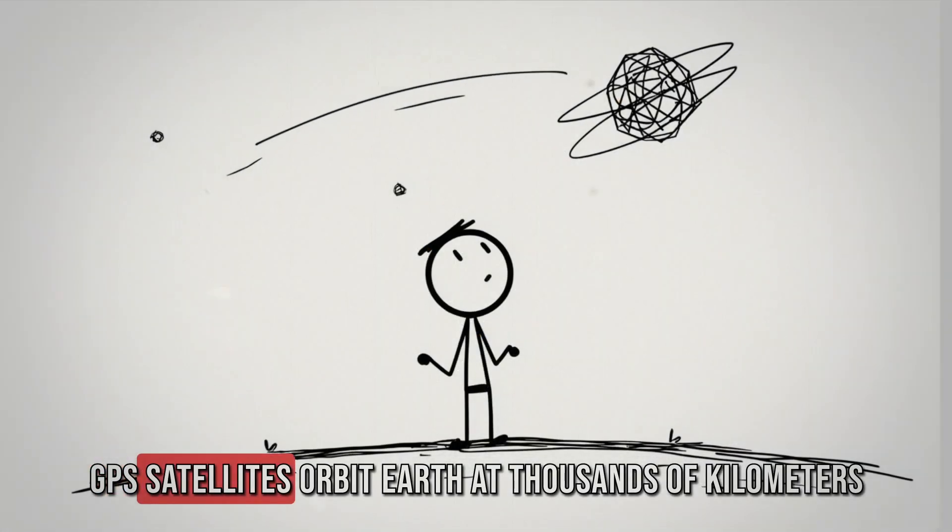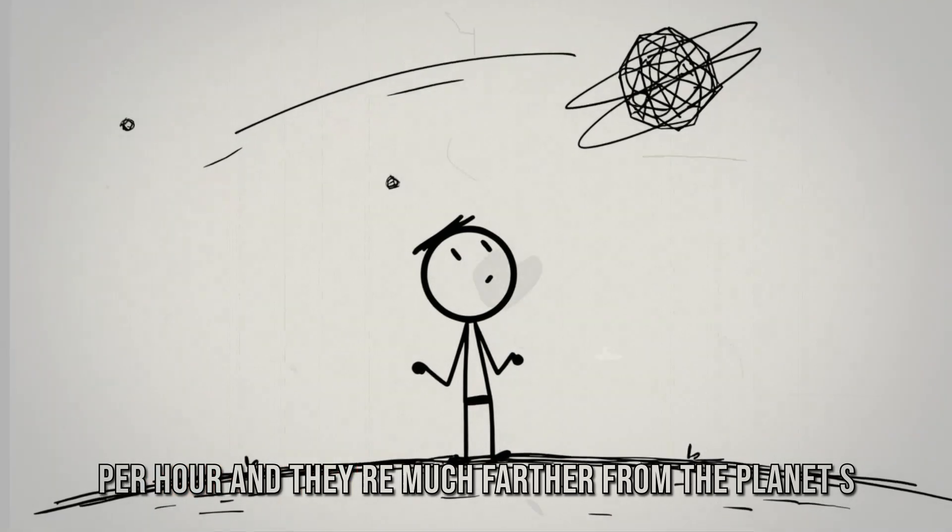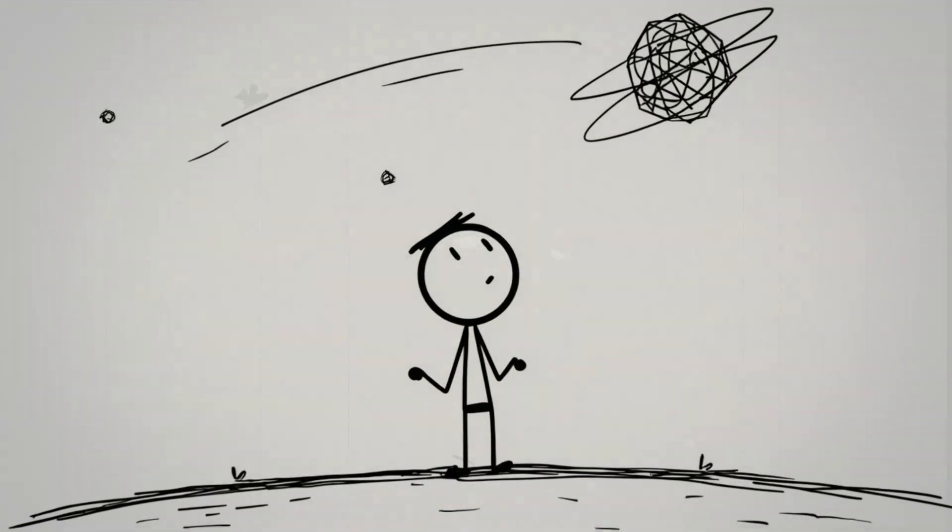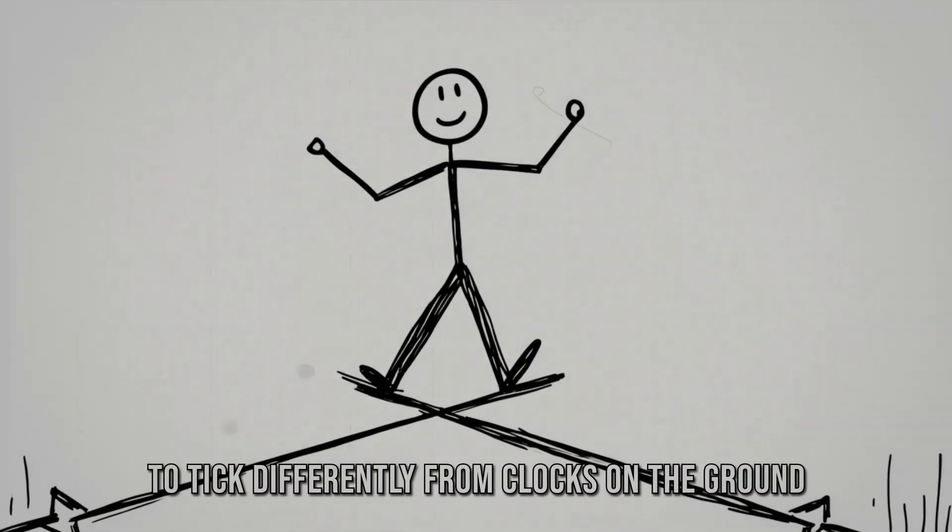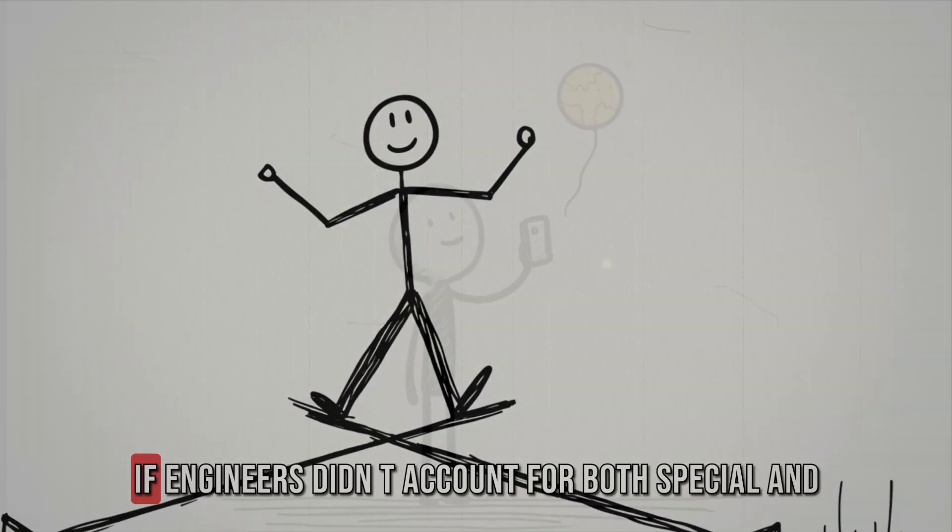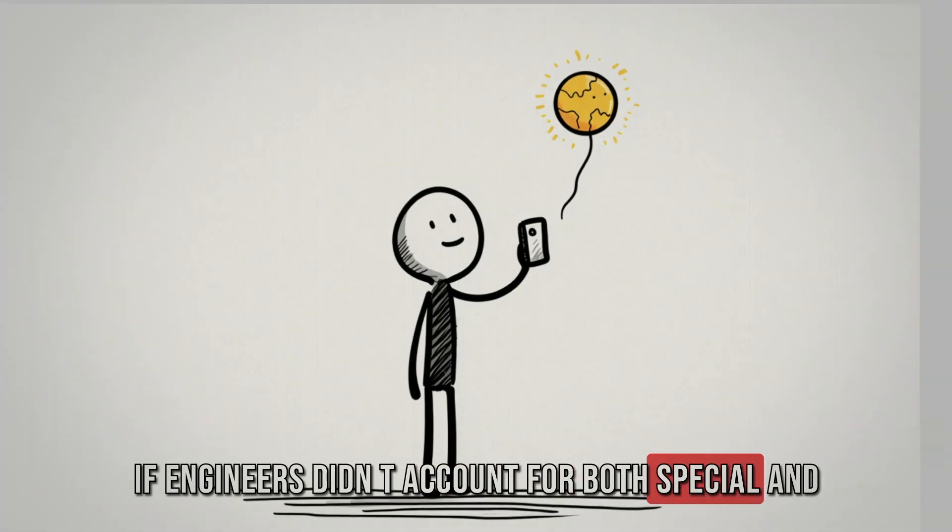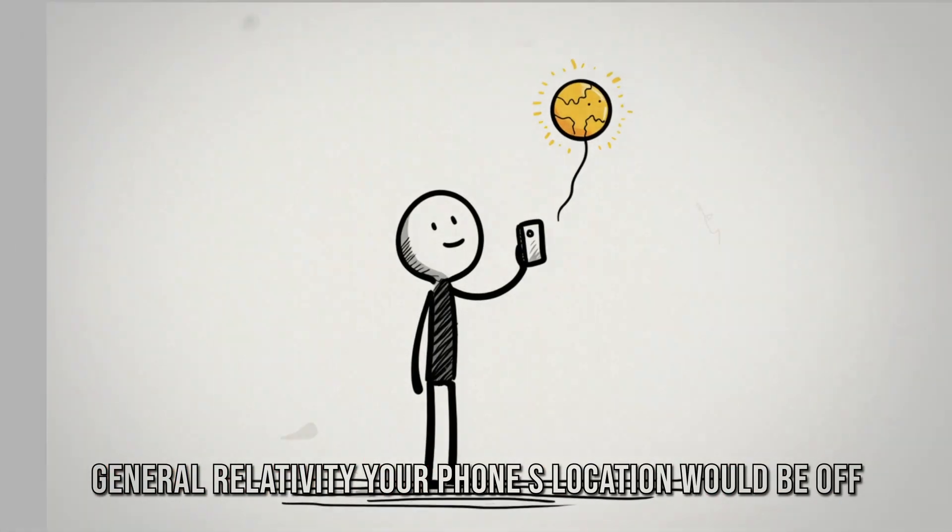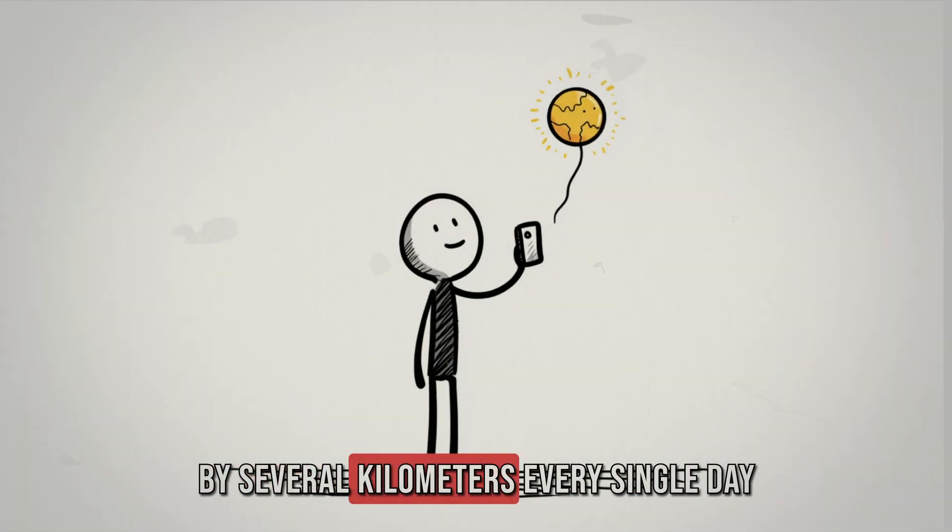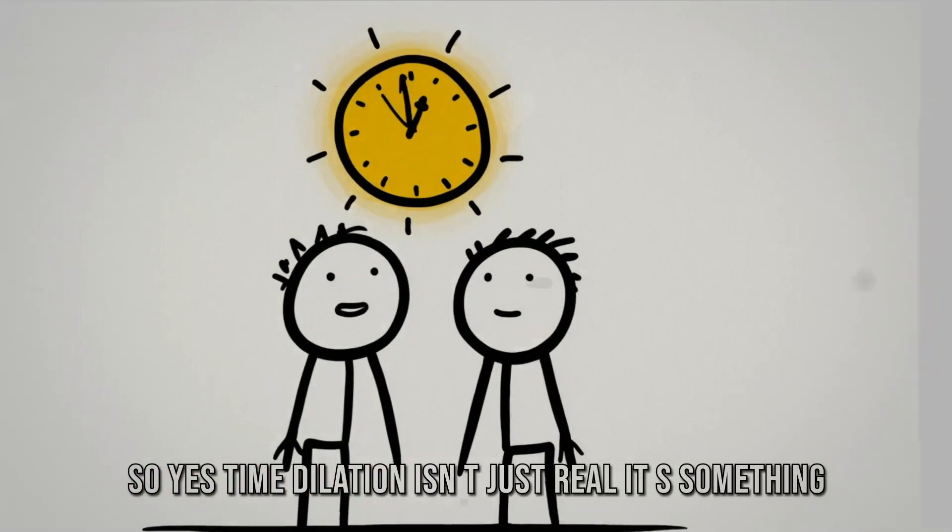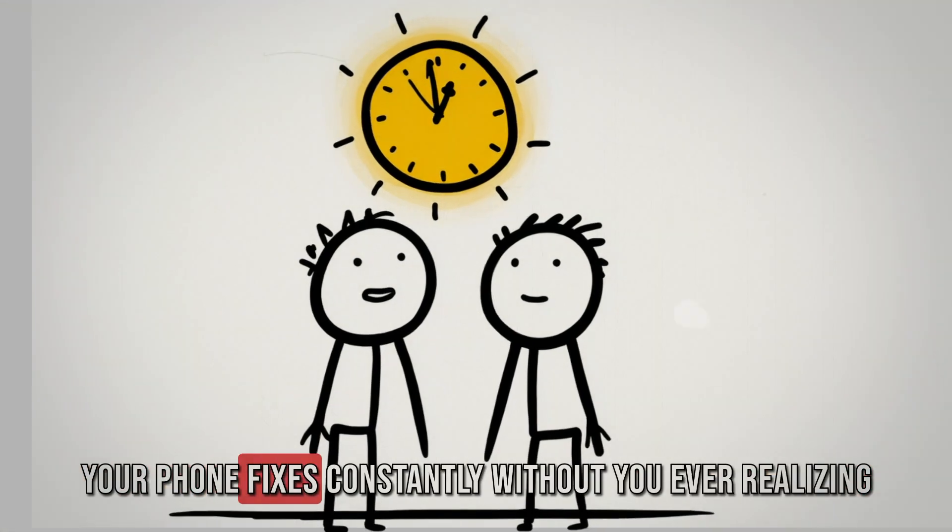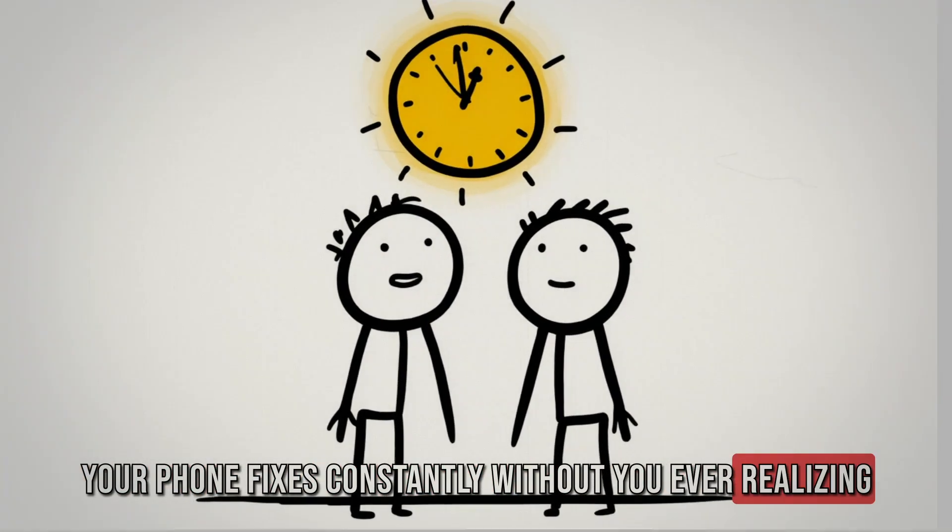GPS satellites orbit Earth at thousands of kilometers per hour. And they're much farther from the planet's gravity. These two factors, speed and altitude, cause their clocks to tick differently from clocks on the ground. If engineers didn't account for both special and general relativity, your phone's location would be off by several kilometers every single day. So yes, time dilation isn't just real. It's something your phone fixes constantly without you ever realizing it.